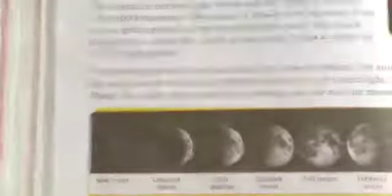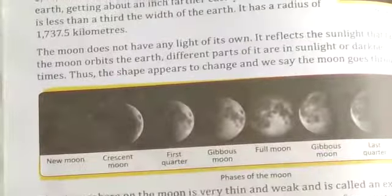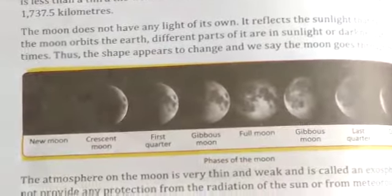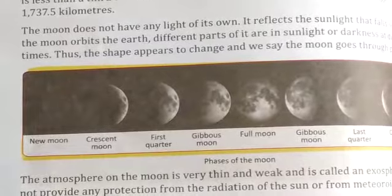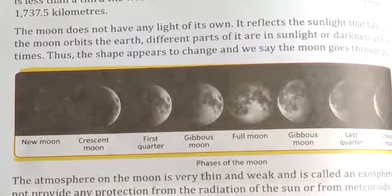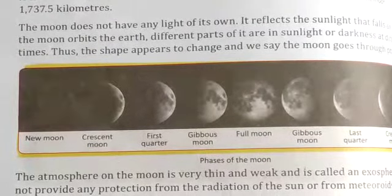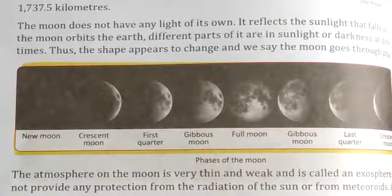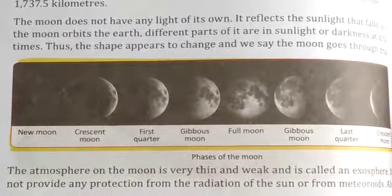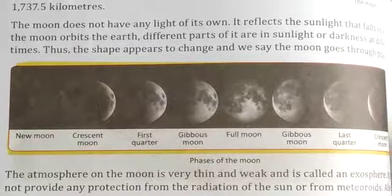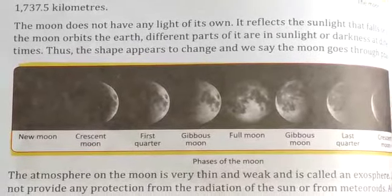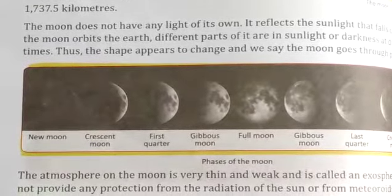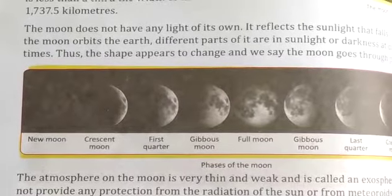Also, there is no water on the Moon. The gravity on the surface of the Moon is one-sixth of the Earth's gravity. In footage of moonwalks, you can see astronauts appear to jump on the surface. Long time back, the Moon had active volcanoes.